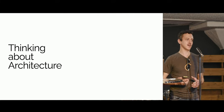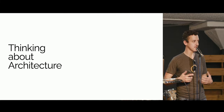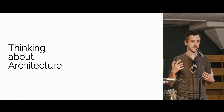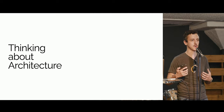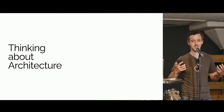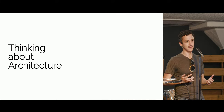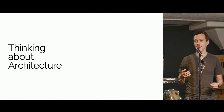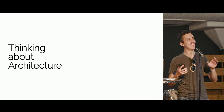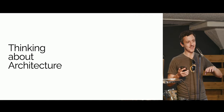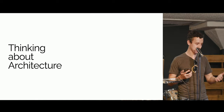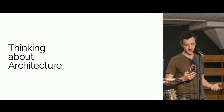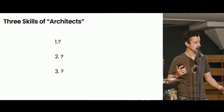Earlier in my career, the people designing system architecture always seemed like really smart people with some sort of secret knowledge, and it wasn't really clear how you got that. But now that I'm at Seven Shifts, spending a lot of my time thinking about, talking about, and helping define architecture, I've realized that you basically only need to know three things to be an architect.